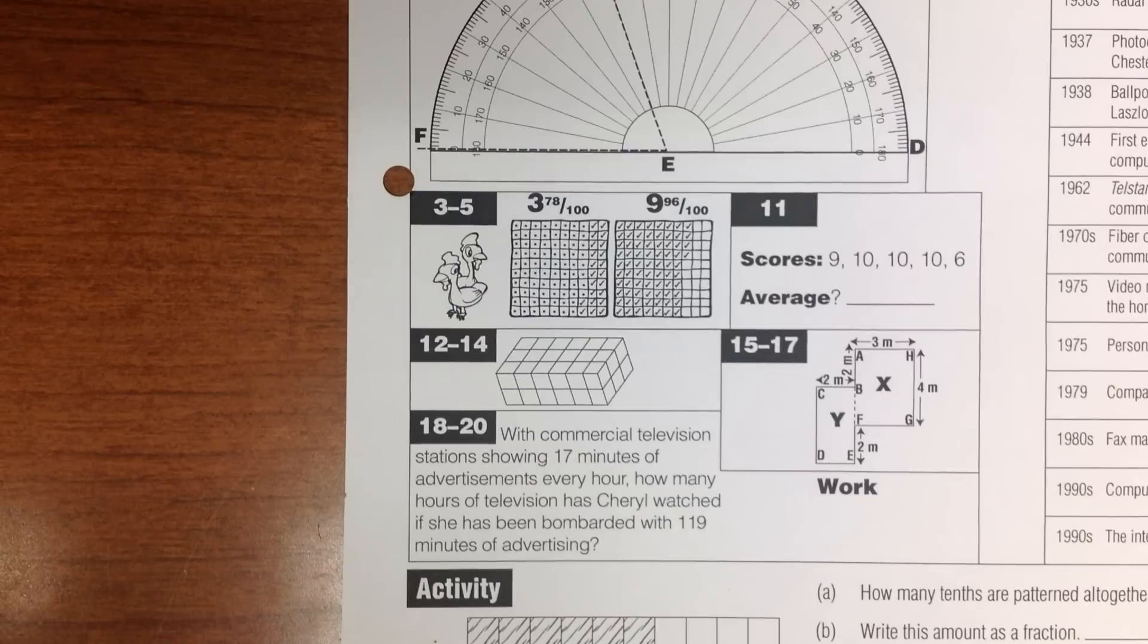Connie Chicken ate three whole cakes and 7/8 of a cake. The 7/8 are marked with check marks on the diagram on your sheet. Write this amount that she ate as a mixed number. Connie Chicken ate three whole cakes and 7/8 of a cake. Write the amount she ate as a mixed number.